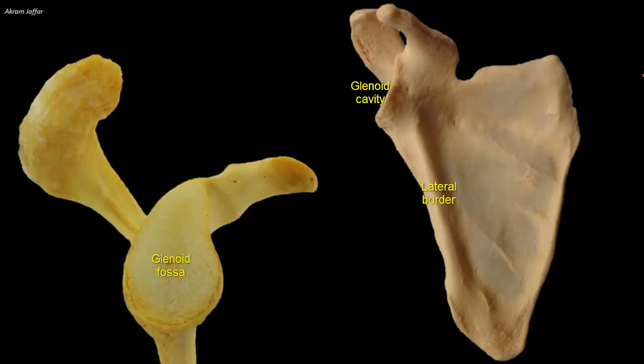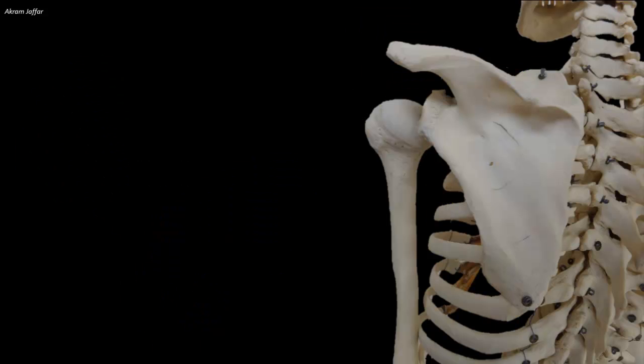This is a lateral view of the glenoid fossa. It looks shallow and oval. It is deepened slightly by a rim of fibrocartilage called the glenoid labrum. This is where the rim of fibrocartilage is attached. At the upper border of the rim is the supraglenoid tubercle, which provides attachment for the long head of biceps and lies within the capsule of the shoulder joint. The glenoid cavity doesn't face directly lateral but sweeps forward around the convexity of the chest wall.